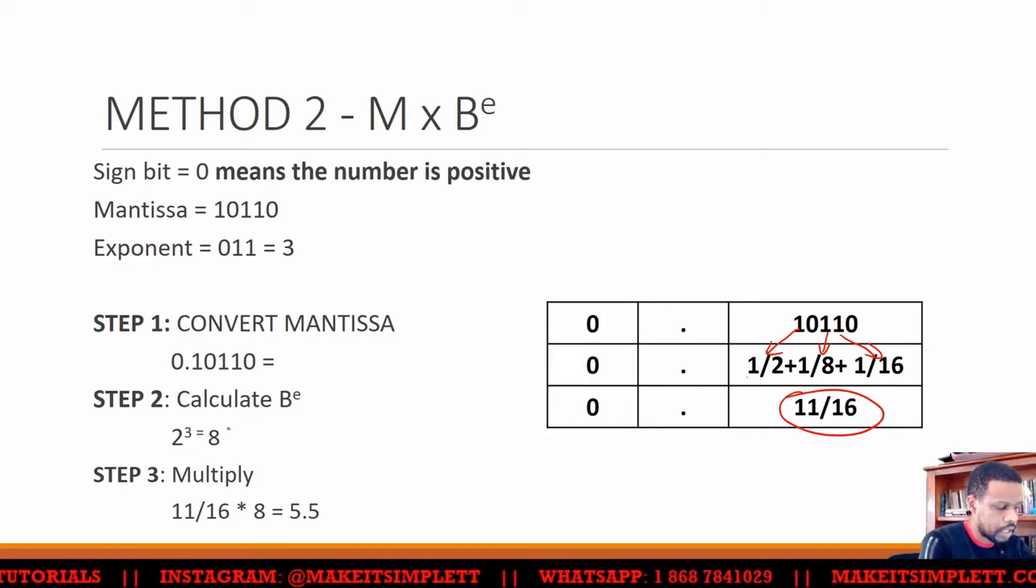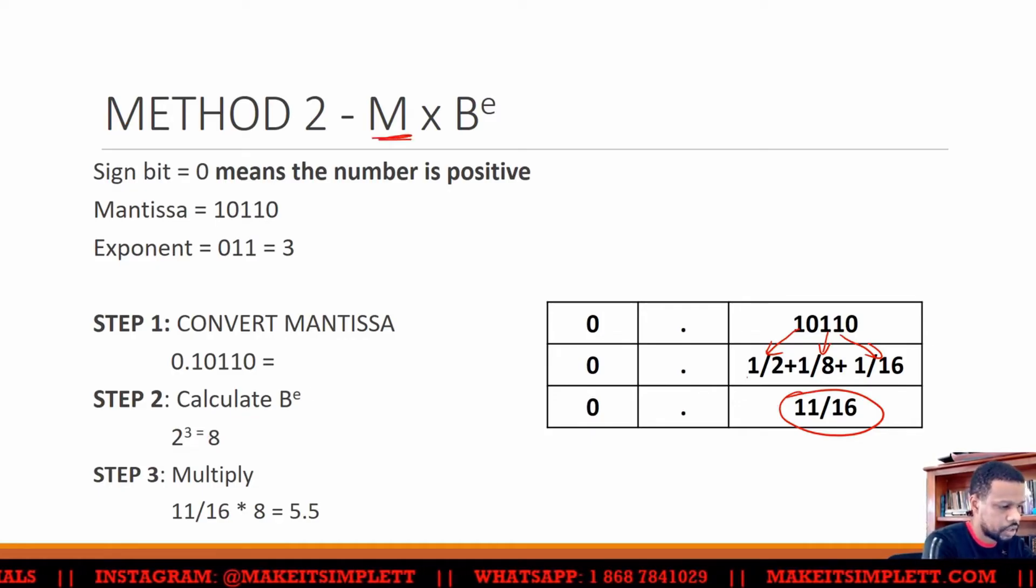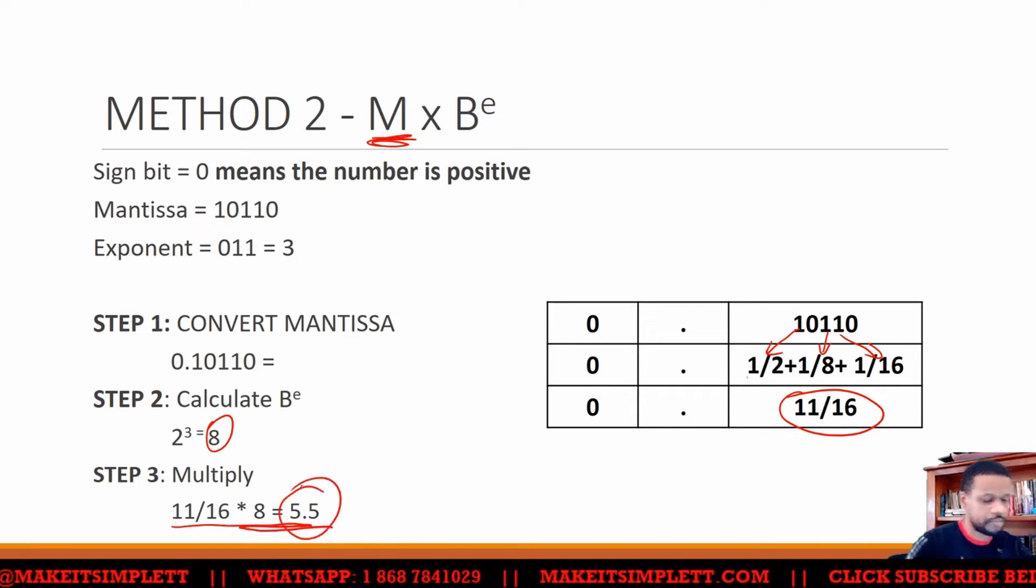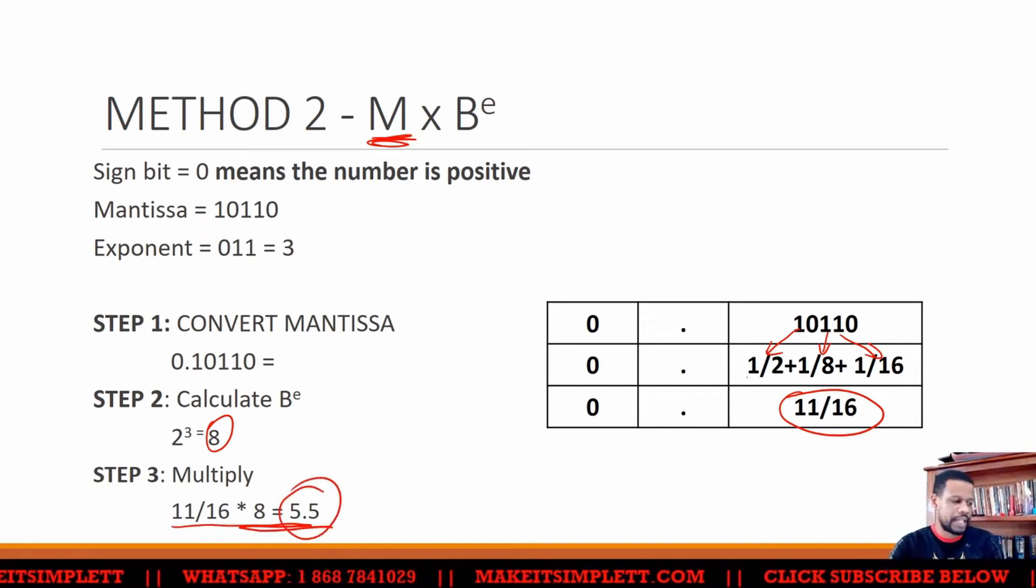And then you multiply the mantissa that you get, multiply by this. And 11 over 16 multiplied by 8 will give you 5.5. So that's the second way to do it.